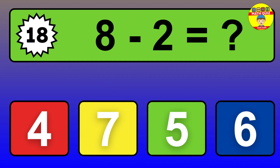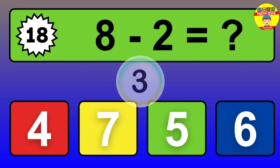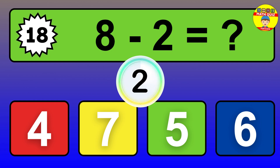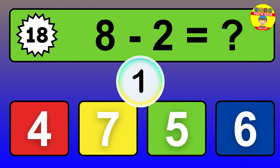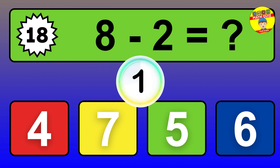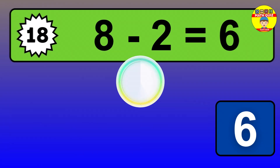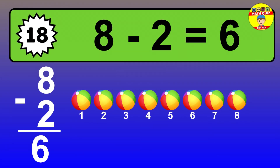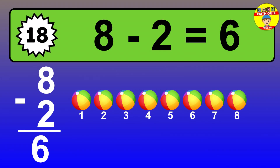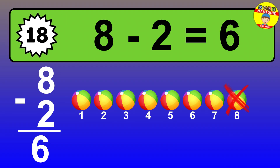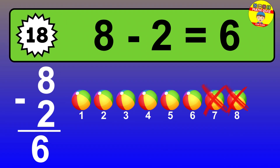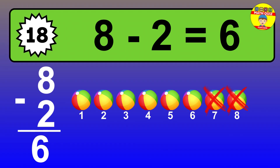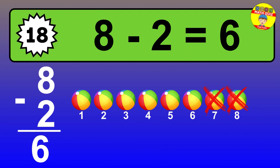Question 18. 8 minus 2 equals what? So the answer is 8 minus 2 is 6. Let's count it. 1, 2, 3, 4, 5, 6.